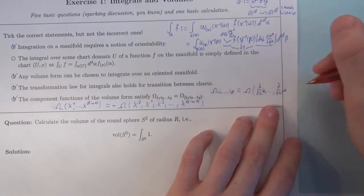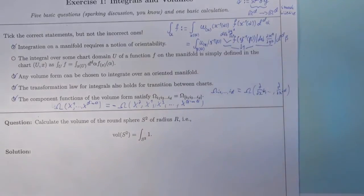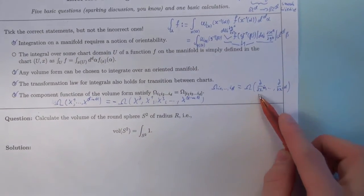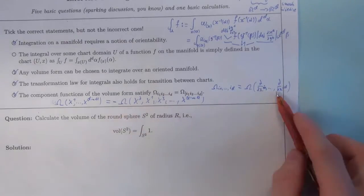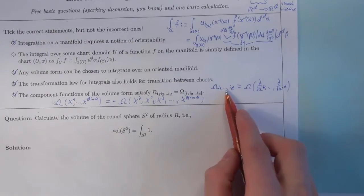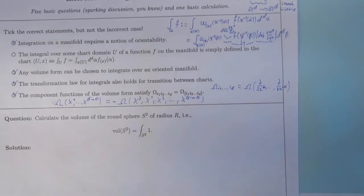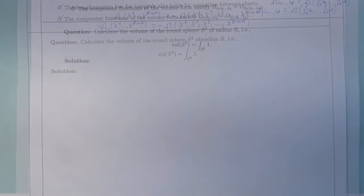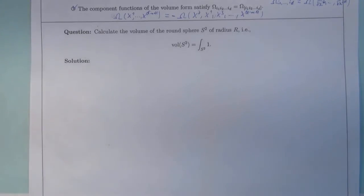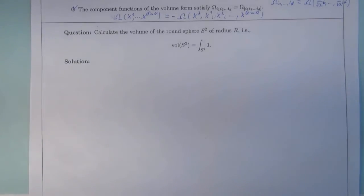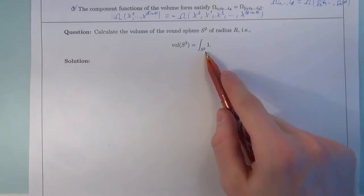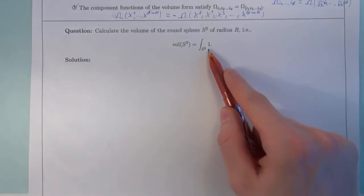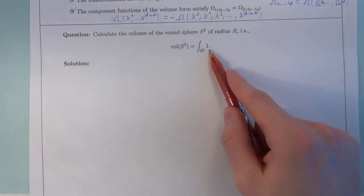They were just defined by inserting basis vectors into the tensor, like this. Interchanging basis vectors here leads to a minus sign and it leads to interchange indices here. Question. Calculate the volume of the round sphere S2 of radius R. That is, the integral over the whole S2 of the constant function 1.